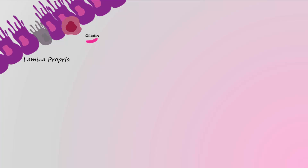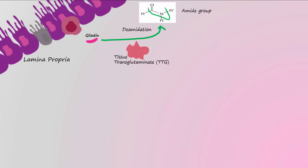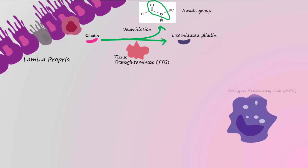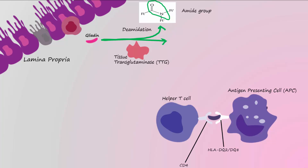Once gliadin gains access to the lamina propria, it is deamidated by the enzyme tissue transglutaminase. The deamidation process removes an amide group, yielding deamidated gliadin, which is even more immunogenic than gliadin. It is then processed by an antigen-presenting cell and presented most commonly by the MHC class 2 receptors HLA-DQ2 or HLA-DQ8 to CD4-positive T helper cells. This interaction results in stimulation of the helper T cell and production of cytokines, which contribute to tissue damage.